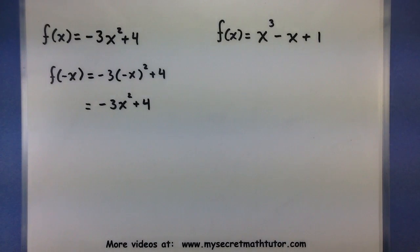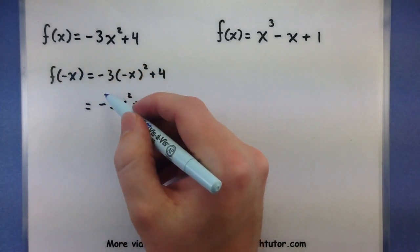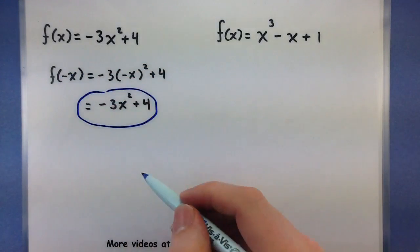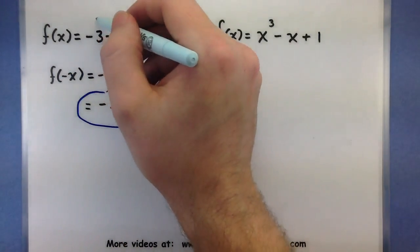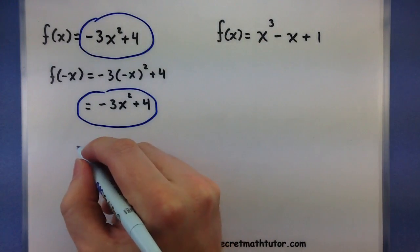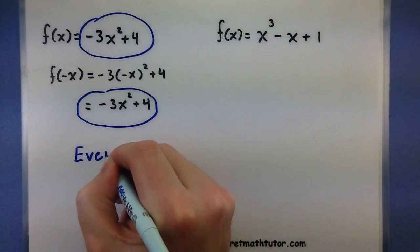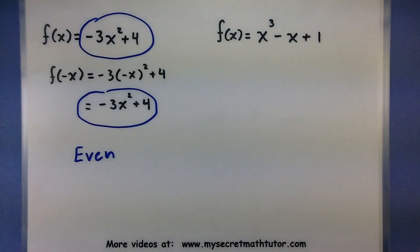All right. Now look at what that is telling us. So when we plugged in a negative x, we have this. And when we plugged in a regular x, we have this. And they're exactly the same. So this satisfies our conditions for an even function. If I plug in an x and I plug in a negative x and it's always the same, sure enough, it is even.